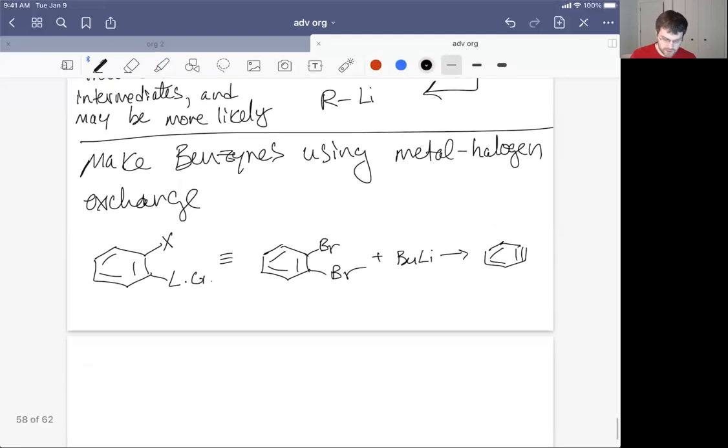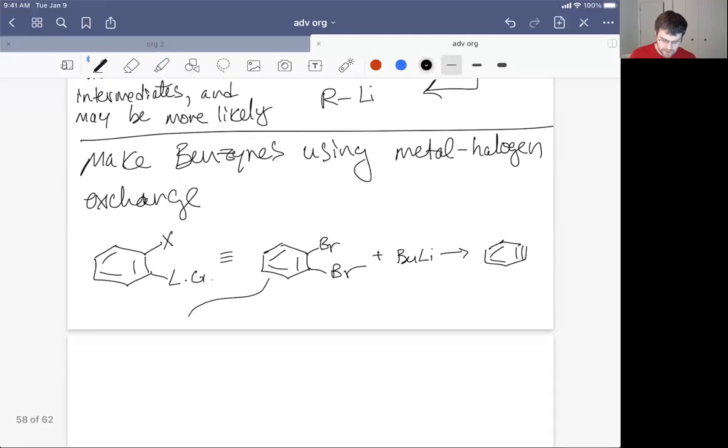Now, if we look at the mechanism, this looks very similar to the mechanism we saw on the last lecture, where the first thing that happens is metal halogen exchange. And let's just say we observe lithiation at one of the bromine atoms.